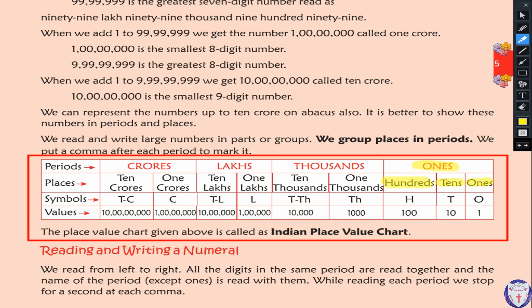The next period is thousands. In the thousands period we have two places: one thousands and ten thousands. The next period is lakhs. In the lakhs period it is also divided into two places: one lakh and ten lakh. After lakhs period we have crores period, which is also divided into two places.